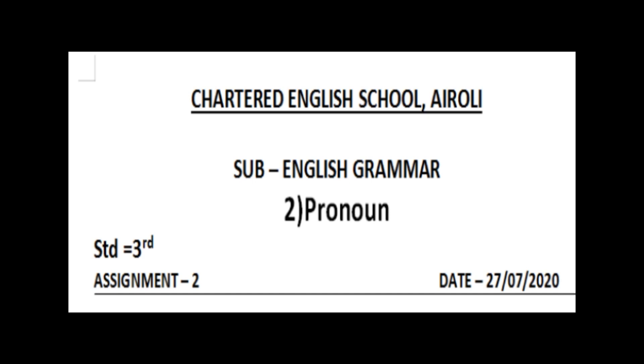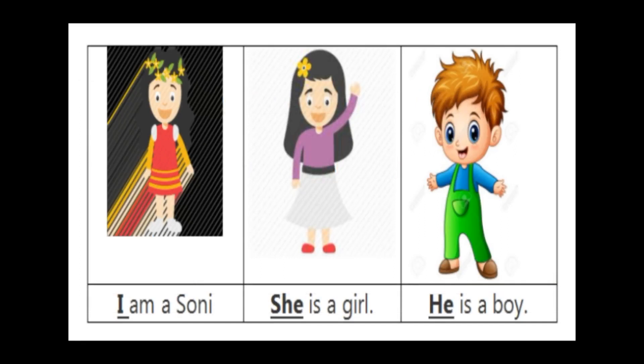What is the pronoun? First we can see some pictures. Here the first picture, there is a girl and the sentence is 'I am Soni.' Then the next sentence, here also they are given a girl picture and the sentence is 'She is a girl.' Girl hai, isliye S-H-E, she ka use kiya hai.